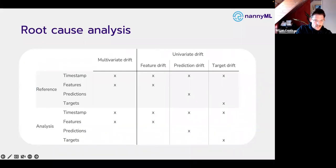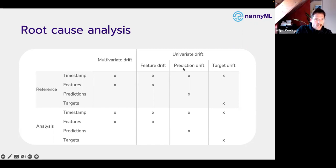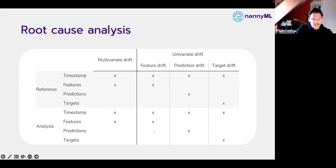Quick recap for root cause analysis: we do this analysis when there is a drop in performance. There are various ways to detect data drift and we look at features to see how they change and what their relationship is with the targets. For drift in the reference, we take either all features for multivariate drift, one feature for feature drift, or the prediction and target for univariate drift. In analysis, we gather the same data. This root cause analysis requires more data but is slightly more straightforward than performance estimation.